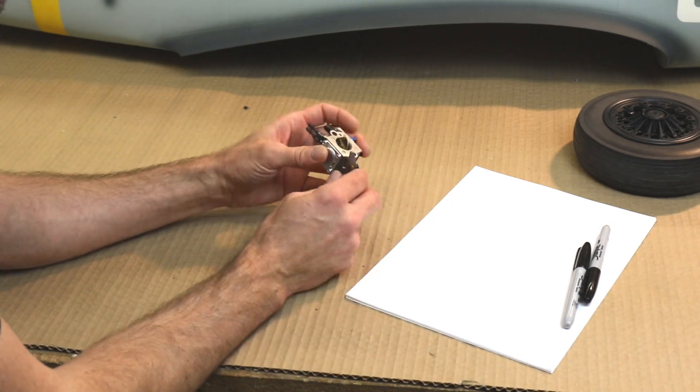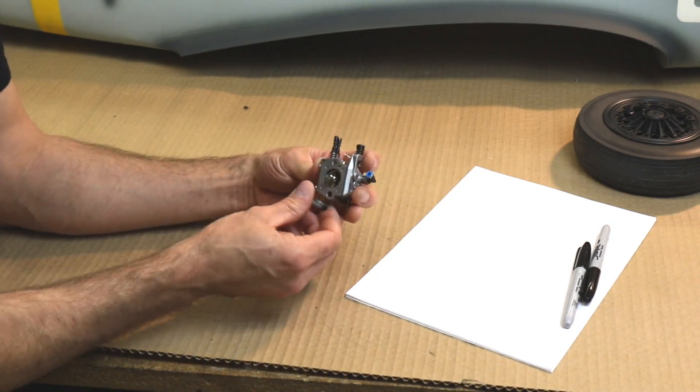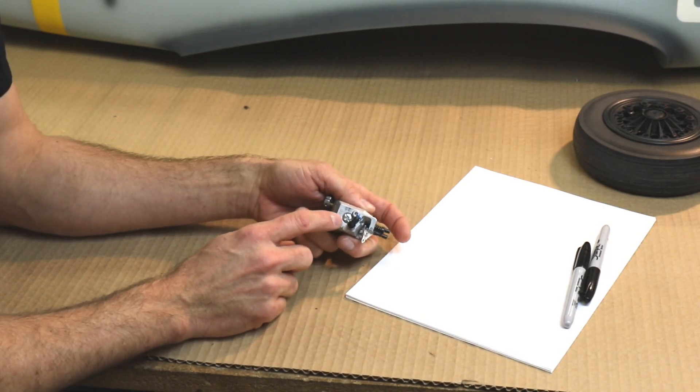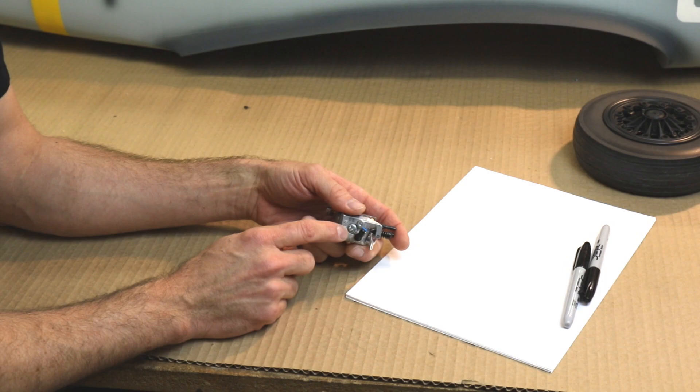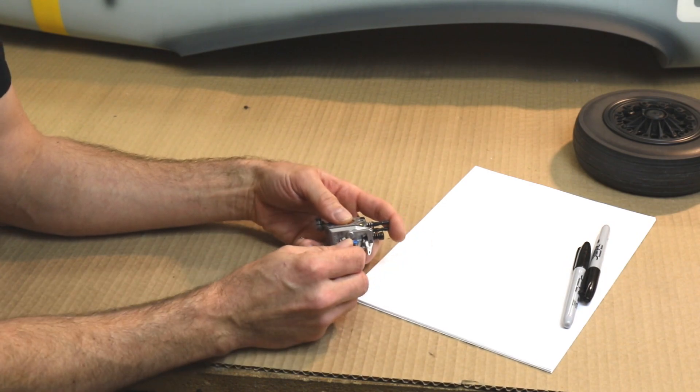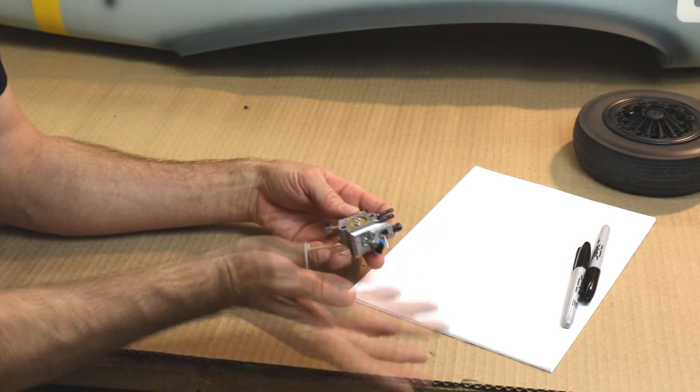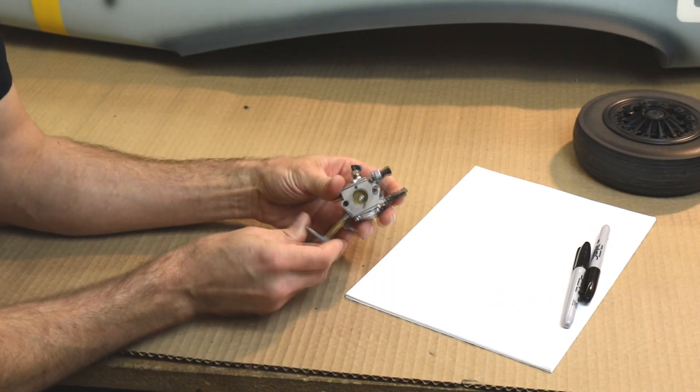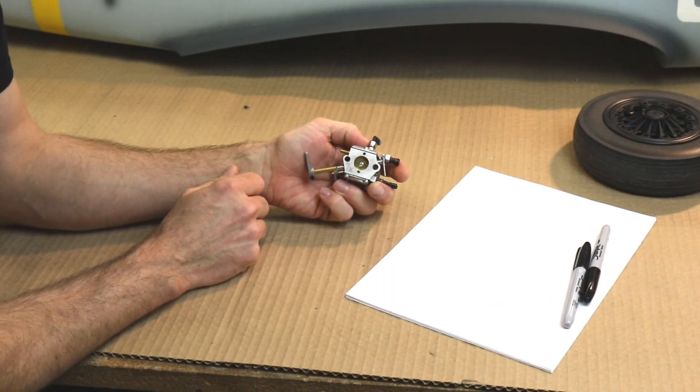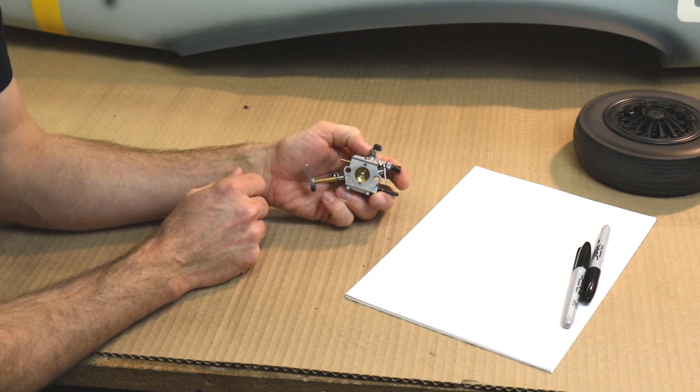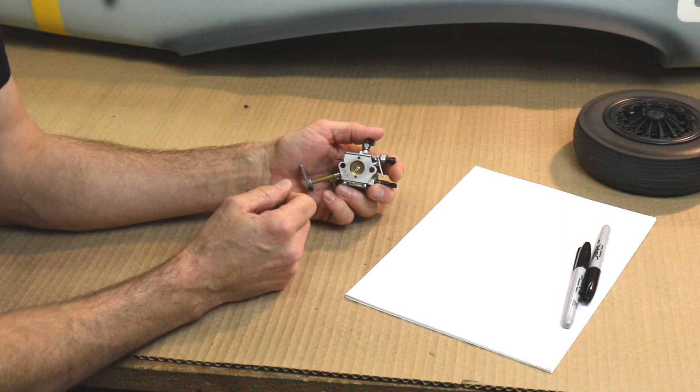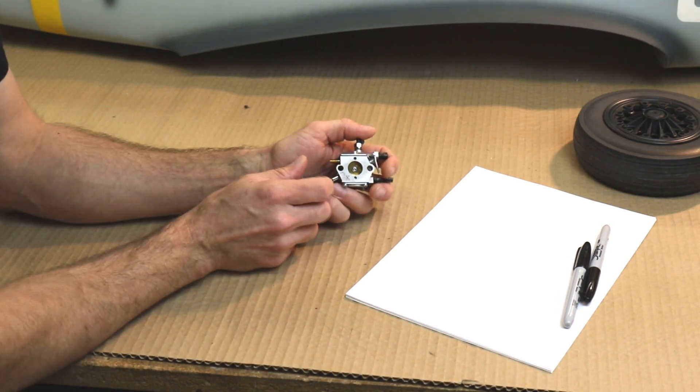So here we've got the carb. Nothing fancy - there's actually one that I got for Moki which has the fitting to drive the internal Walbro pump, which we sort of try to avoid by using a fuel pump. But that's besides the point. Choke, throttle. Let's mimic a Moki, a Valach, a Kolm, a Roto, a Zenoah, a DA - doesn't matter, right?